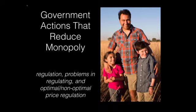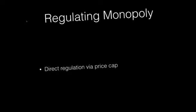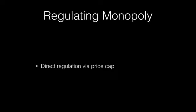Welcome to my next installment in my video lecture series for economics. In this particular video lecture, we're taking a look at government actions that reduce monopoly — in particular, regulation, the issues that come up when you're trying to regulate a monopoly, and examples of optimal versus non-optimal price regulation. The main vehicle often used to regulate a monopoly is direct regulation via a price cap, i.e., a price ceiling stating the maximum price the monopolist is allowed to charge.